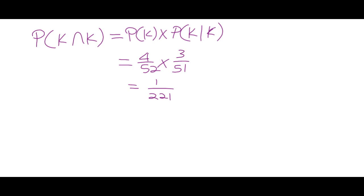Use the raw probabilities — the actual counts. Don't convert: go with four out of 52, not one out of thirteen. There are four kings out of 52 cards. If you've drawn a king, there are now three kings left out of 51 cards. Multiply those fractions to get one out of 221.